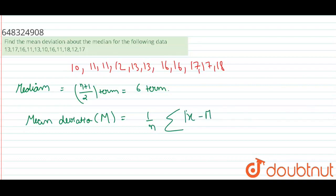Mean deviation about median is equal to 1 by n summation of x minus m mod. This is equal to 1 by 11, 3 plus 2 plus 2 plus 1 plus 3 plus 3 plus 4 plus 4 plus 5 which is equal to 27 by 11.